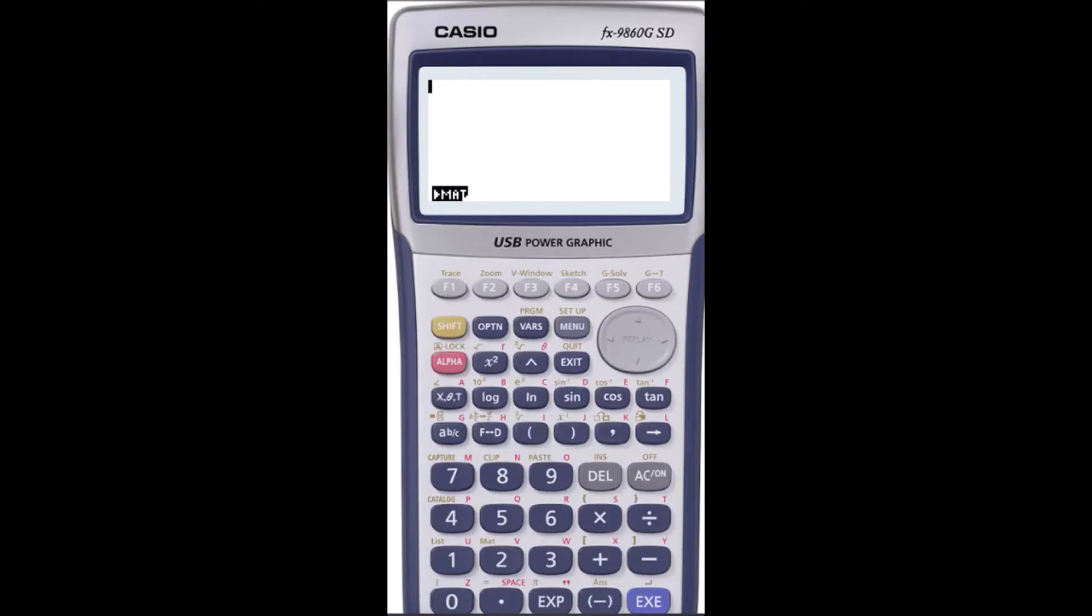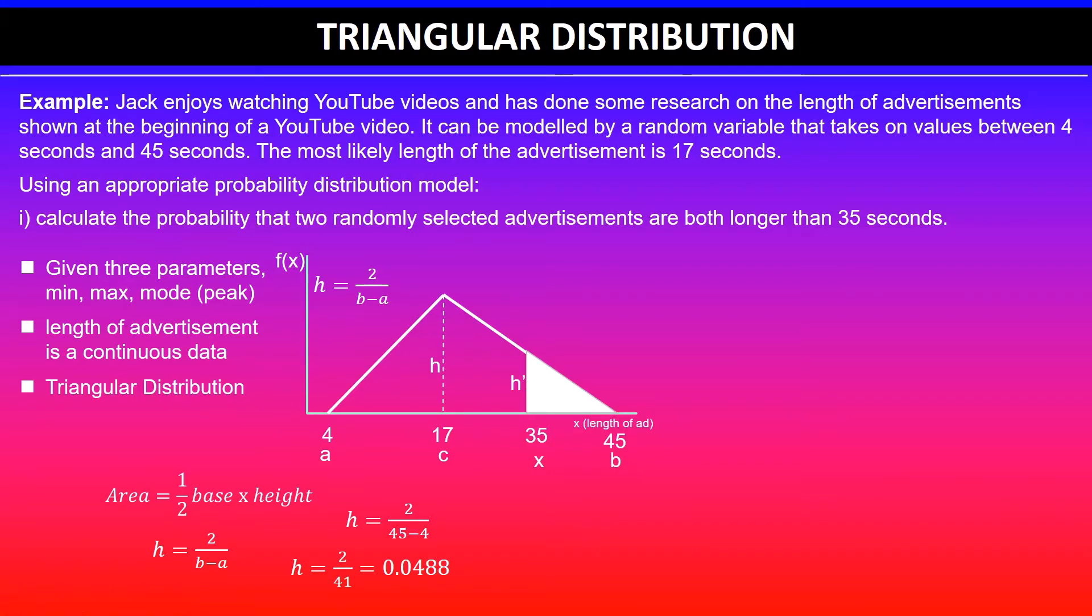We'll quickly look at the height, so height is 2 divided by 41. 45 take away 4 is 41, so 2 over 41 which is same as 0.0488 up to 4 significant figures.